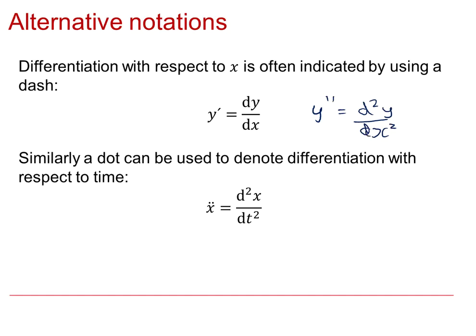Similarly, a dot can be used to denote differentiation with respect to time, t. So for example, x dot would equal dx by dt, and x double dot would be d2x by dt squared, and so on.